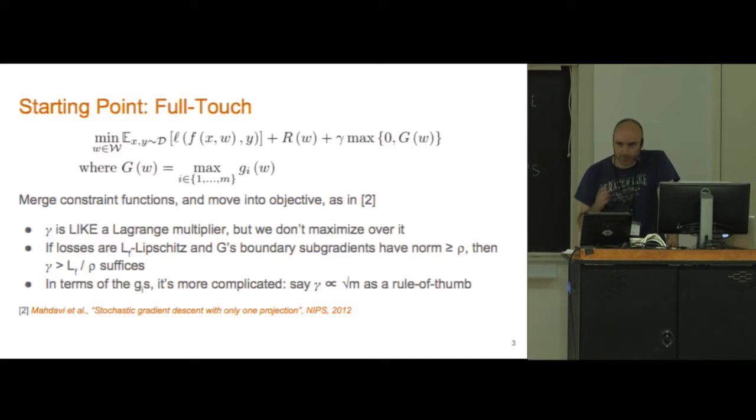Basically what we do is take our large number of constraints, our m constraints, these lowercase gi's, and we maximize over all of them to define this uppercase G. Then we constrain uppercase G to be less than or equal to zero. Clearly if uppercase G is less than or equal to zero then all the lowercase g's will be less than or equal to zero. This is completely equivalent to having a large number of separate constraints.